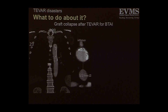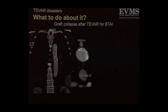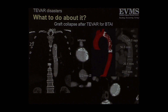What to do about it? This is an example of a graft collapse. This is a TVAR for a traumatic aortic injury — an old case. You can see how the graft has collapsed completely. Usually people say when something like that happens you have to convert to an open thoracotomy. That patient was not a candidate for that.